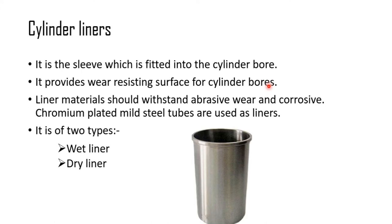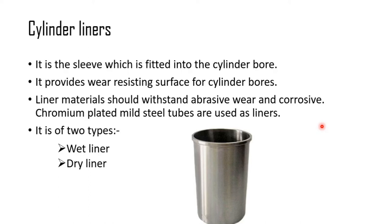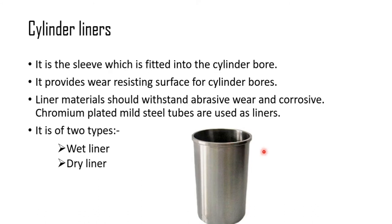The cylinder liner is very important. In actual practice, the piston moves in the liner — there is no direct contact between the piston and the engine block. The liner is installed in the engine block, and it prevents direct contact between the piston and the engine block. This plays a very important role.